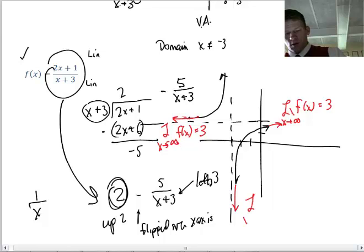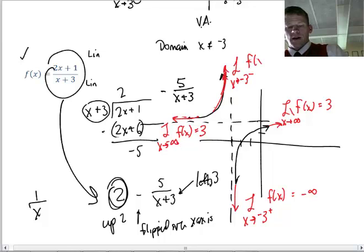This part, this would be the limit as x heads to negative 3 from the right. That's heading to negative infinity. And this limit here, that'd be the limit as x is heading to 3, I'm sorry, to negative 3 from the left.